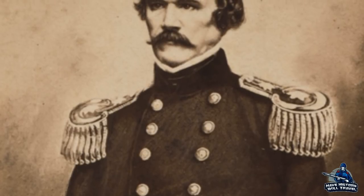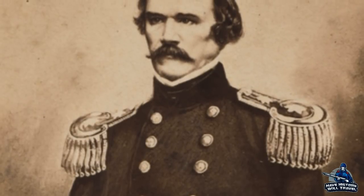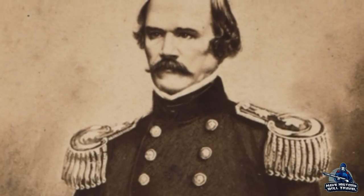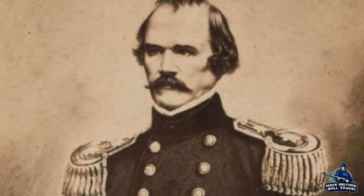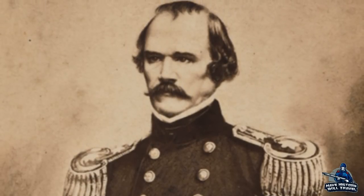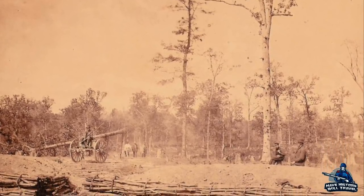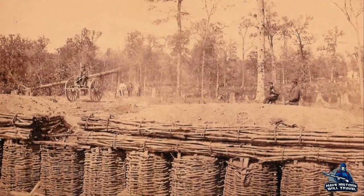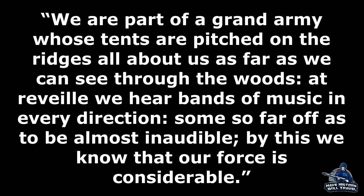Albert Sidney Johnston scrambled out of Kentucky and Middle Tennessee with the state government in tow. He settled on concentrating his forces at Corinth, Mississippi, the site of a major crossroads of railroads. President of the Confederacy Jefferson Davis sent him troops from other departments and other areas of the South. Regiments and brigades were coming in by rail and by foot from the banks of the Mississippi River and as far away as the Gulf Coast to aid Johnston. General Polk's units would be involved in a multiple rail car pileup on the way to northern Mississippi, but the army was slowly coming together. A soldier amazed at the sight of the growing army explained that 'we are part of a grand army whose tents are pitched on the ridges all about us as far as we can see through the woods.'